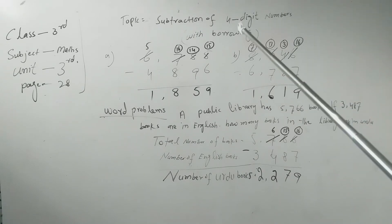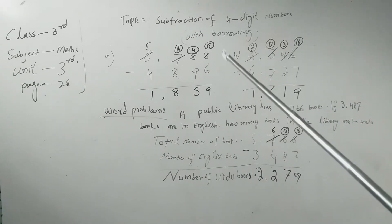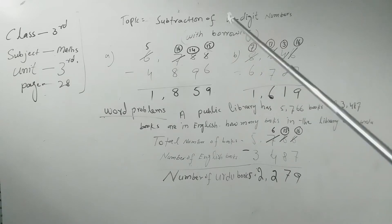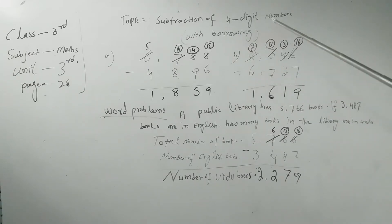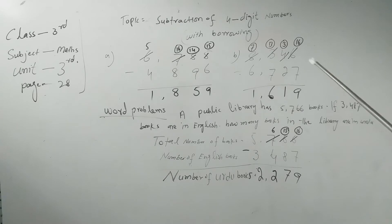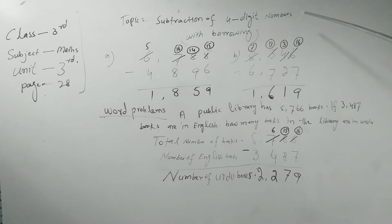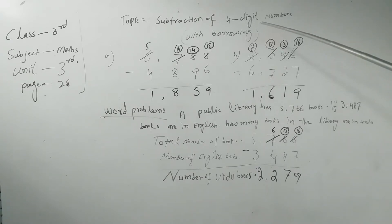Page number twenty-eight. The topic is subtraction of four-digit numbers with borrowing. Subtraction of four-digit numbers with borrowing.